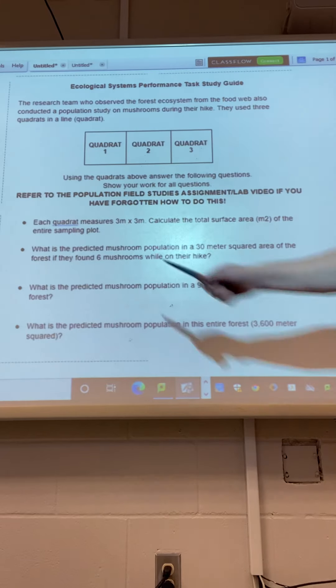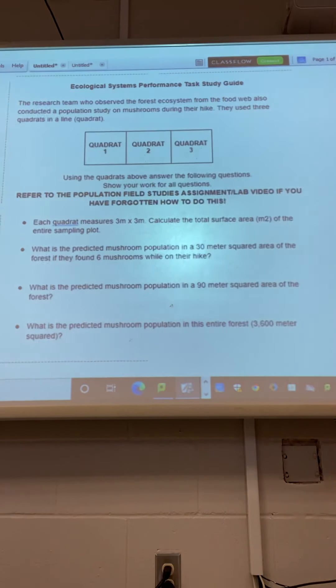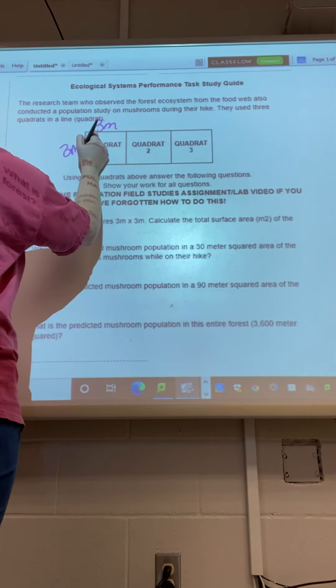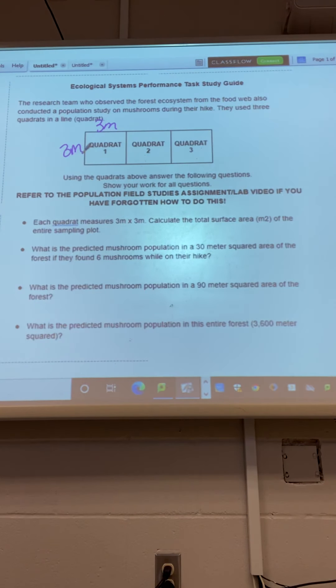They used three quadrants in a line. Quadrant one, quadrant two, quadrant three. So use those quadrants to answer the following questions. Each quadrant measures three meters by three meters. Calculate the total surface area of the entire sampling plot.